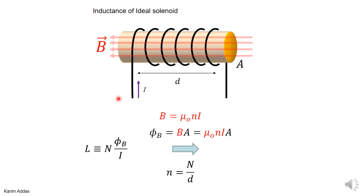If you remember, the magnetic field inside an ideal solenoid is μ₀nI, where small n is the total number of turns over the total length, and the magnetic flux is B times the area. When you substitute, you get μ₀nI times the area.